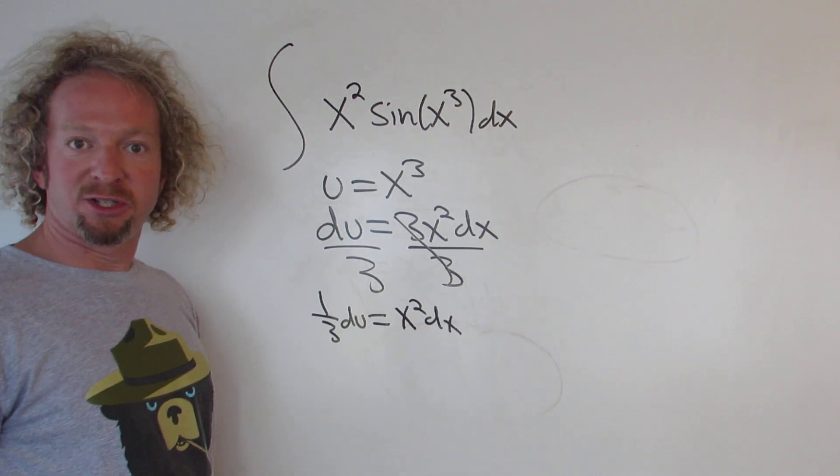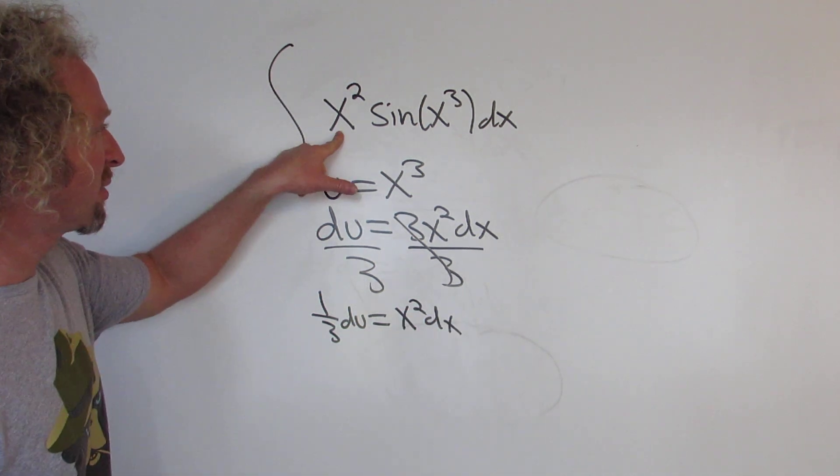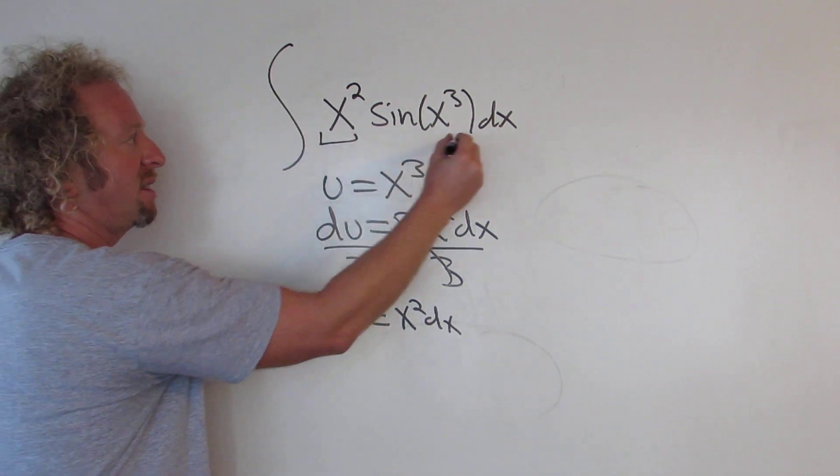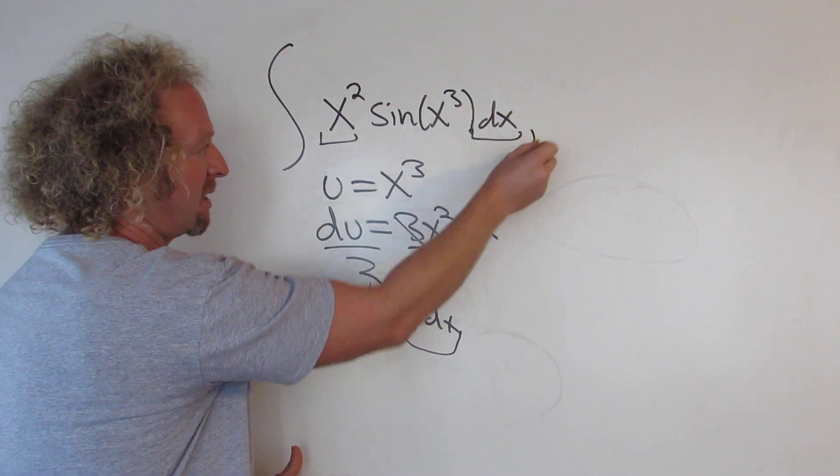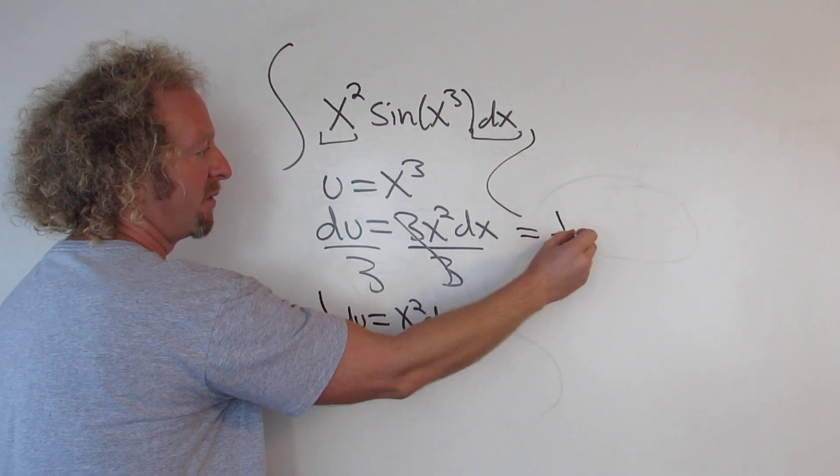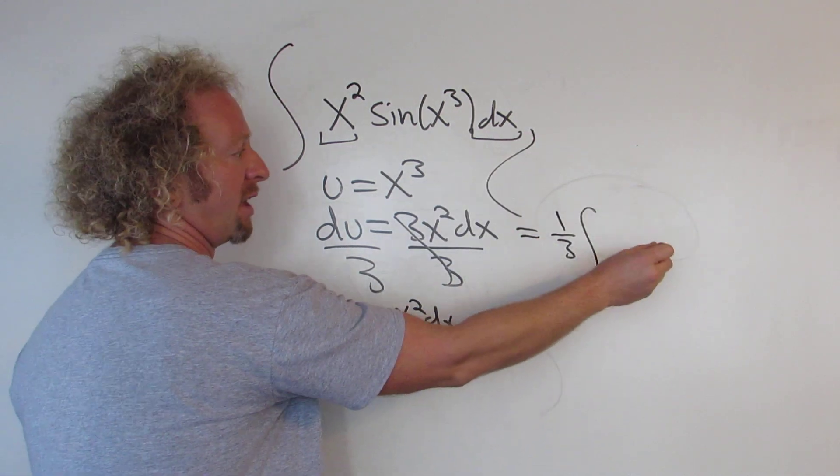And now we're ready to make our substitution. So x squared dx, that's this and this, we know exactly what that is. That's equal to 1 third du. So this guy here is equal to 1 third, then integral sine du.